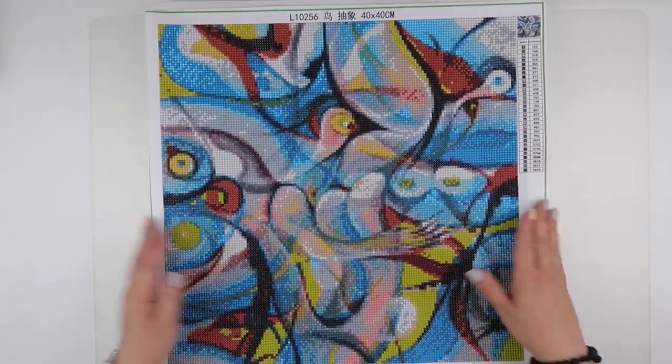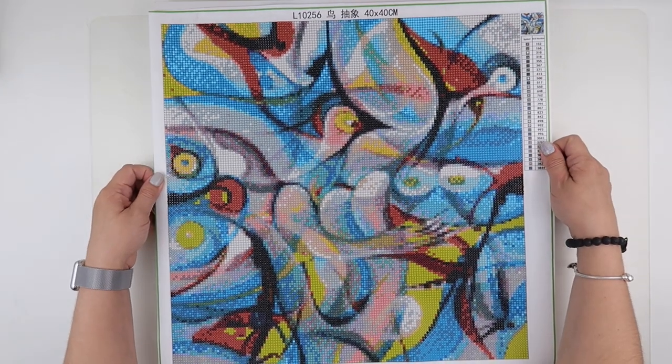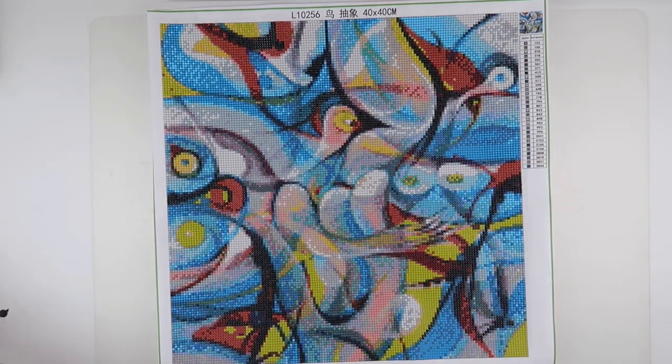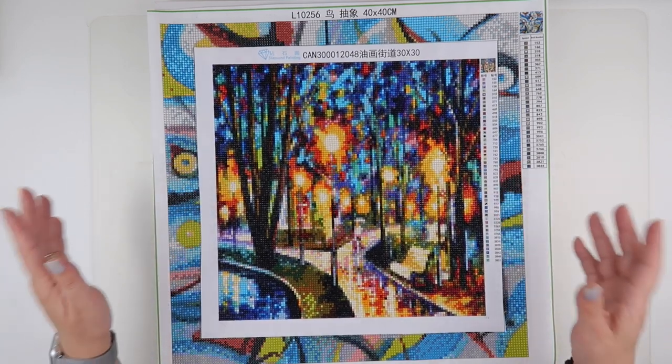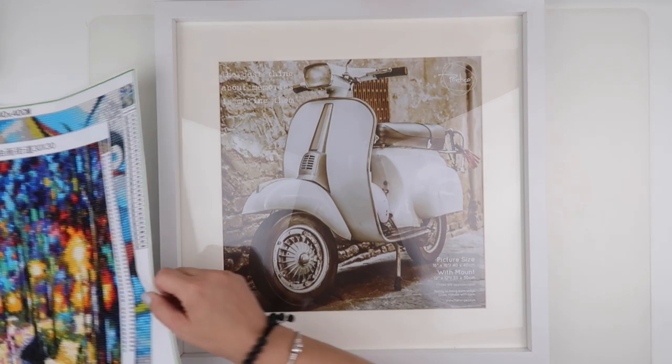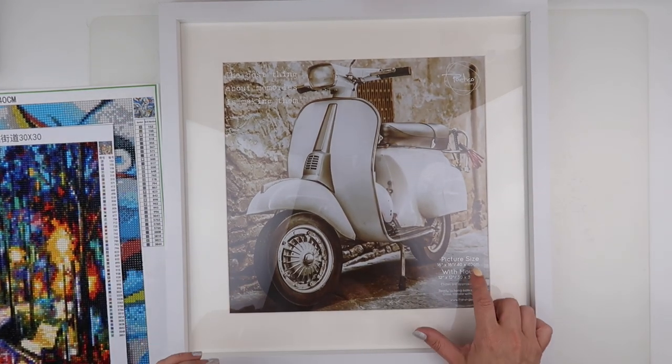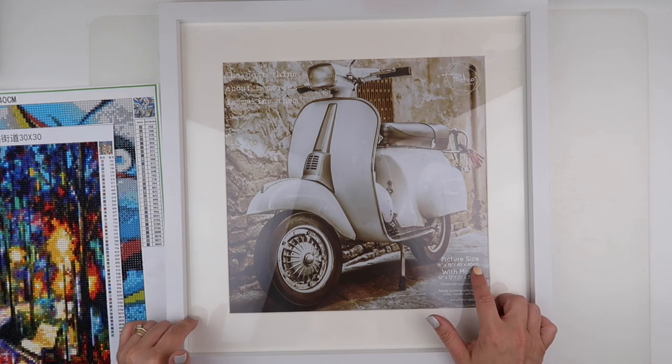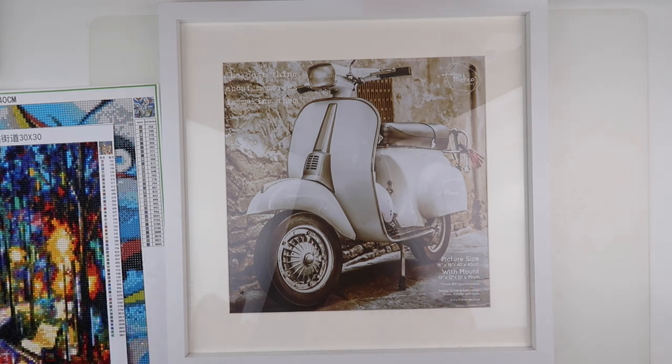However, I have also just finished this one, which I think looks pretty amazing. This frame will do both, so it either does a 40 by 40 without the mount or a 30 by 30 with the mount. So what I thought I'd do is I'd do both and we'll have a look at how they look, then I will make my final decision.